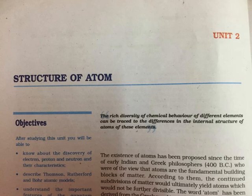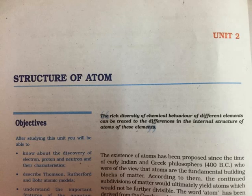Section 2.1.3: Charge on the Electron. R.A. Millikan devised a method known as the oil drop experiment to determine the charge on the electron. He found the charge on the electron to be −1.6 × 10⁻¹⁹ coulomb. The present accepted value of electrical charge is −1.6022 × 10⁻¹⁹ coulomb. The mass of the electron was determined by combining this result with Thomson's value of e/mₑ ratio: mass of electron = 1.6022 × 10⁻¹⁹ C ÷ 1.758820 × 10¹¹ C/kg = 9.1094 × 10⁻³¹ kg.